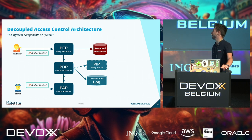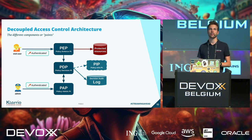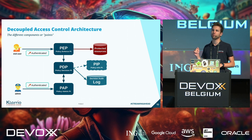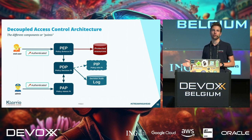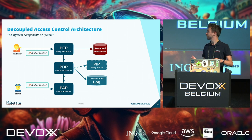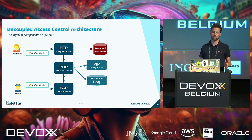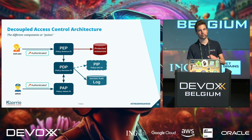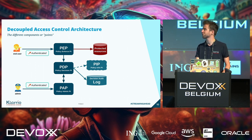There is also a policy information point, which might not be present in every case. The idea is that your policy enforcement point may not know everything about a user, and you might want to consider that information when making policy decisions. The policy information point provides additional attributes that the enforcement point cannot provide. It's a bit complex to implement, and I'll get back to that later.